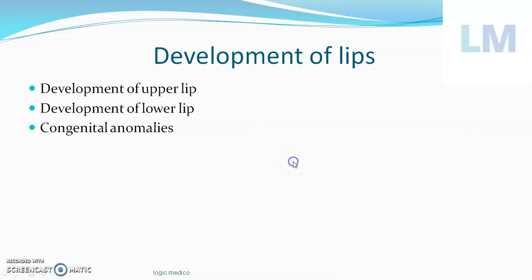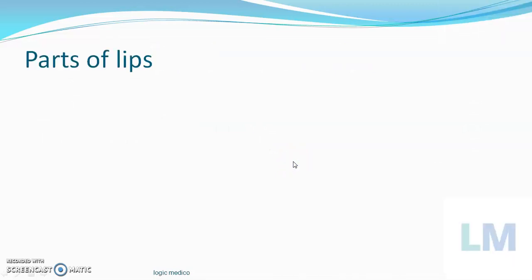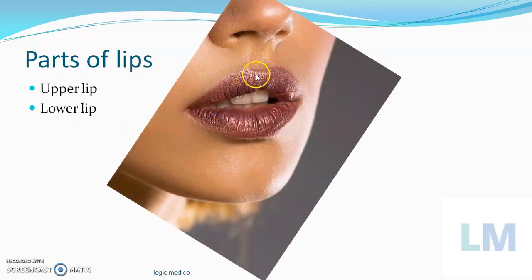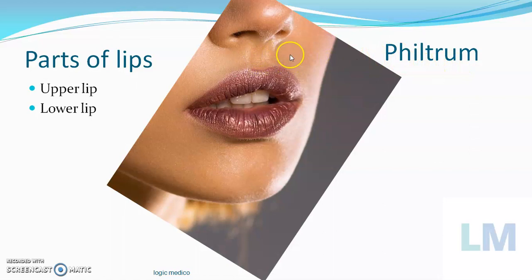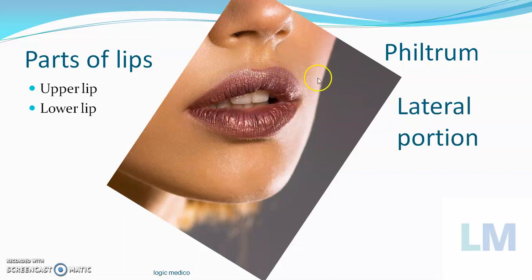Before going into the actual topic, we need to know the parts of the lip. There are two lips: the upper lip and the lower lip. The depressed area in the upper lip is called the philtrum, because it appears like a cupid bow depression. The other portion is called the lateral portion of the upper lip. There is no such depression in the lower lip.